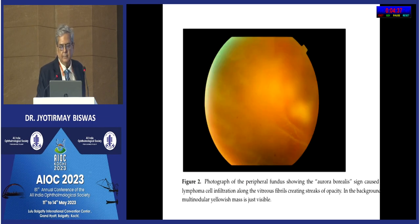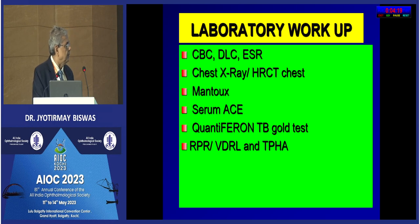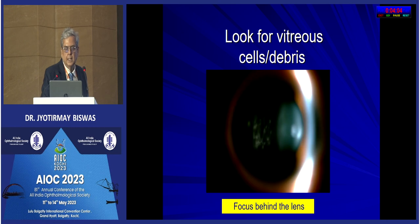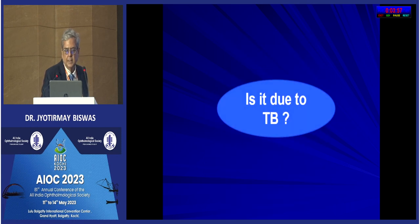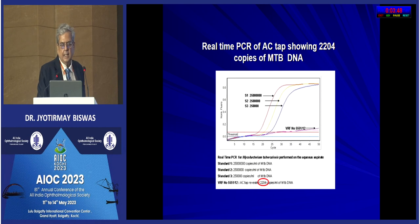Aurora borreliosis can present with vitreous exudates and a yellowish lesion in the background. For laboratory workup, I routinely do CBC, DLC, ESR, HRCT chest. I don't do chest X-ray. For Mantoux, I have done both quantiferon TB Gold, though not in all cases. I do RPR, VDRL, and TPHA routinely. For example, in a 25-year-old female with blurring of vision and floaters, I do an HRCT chest. If it is TB, an HRCT chest can show miliary tuberculosis or pulmonary infiltrates in the lung, and real-time PCR from AC tap showed 2204 copies of MTB DNA.